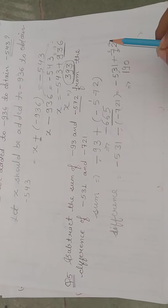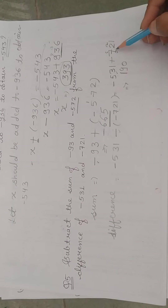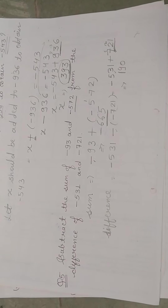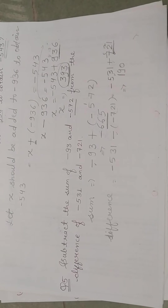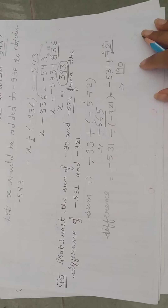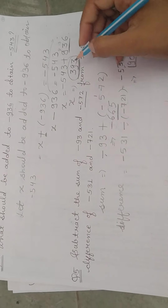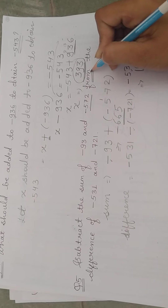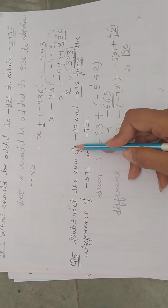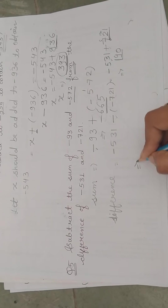The answer's sign is determined by the greater digit — the greater digit is 721, whose sign is plus, so our answer is positive 190. Now we have the difference; we still need to subtract the sum from it.